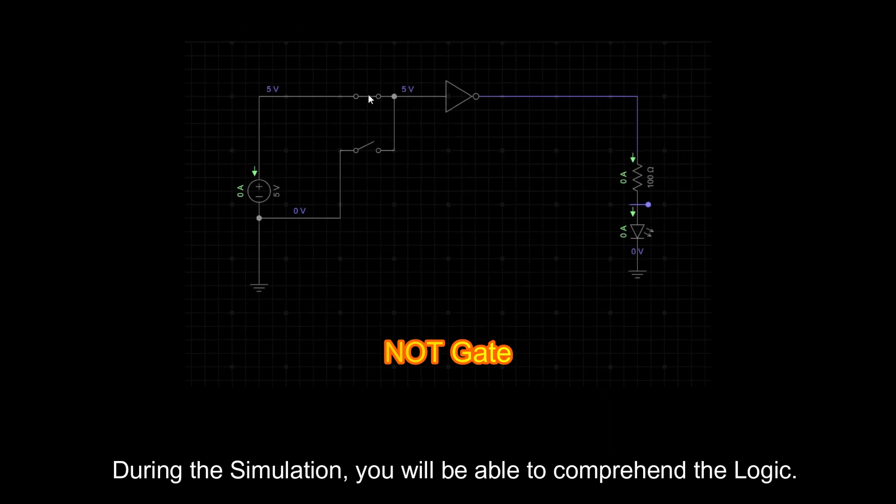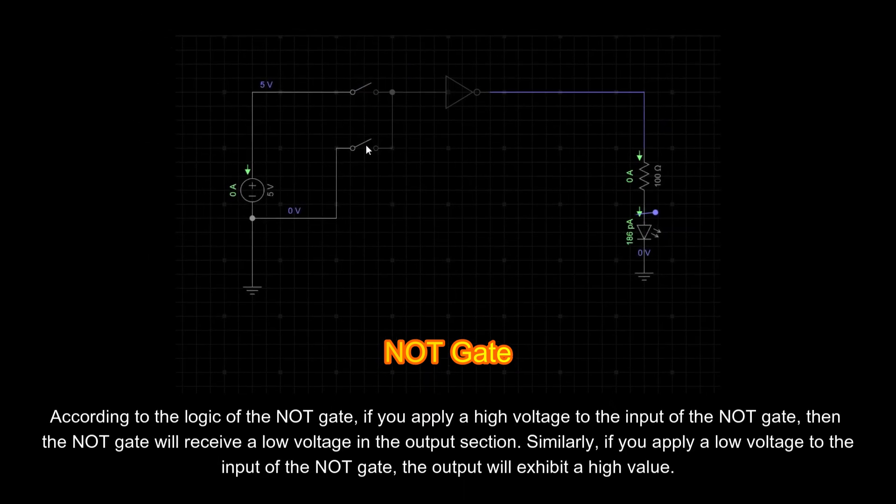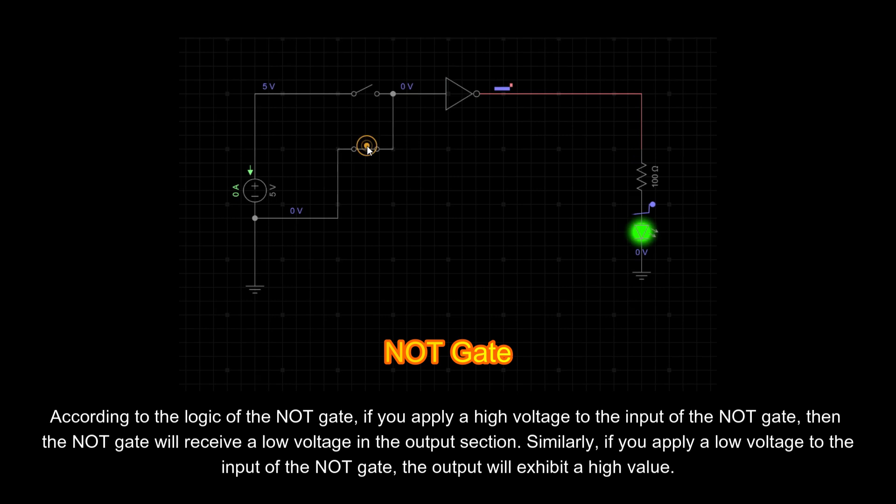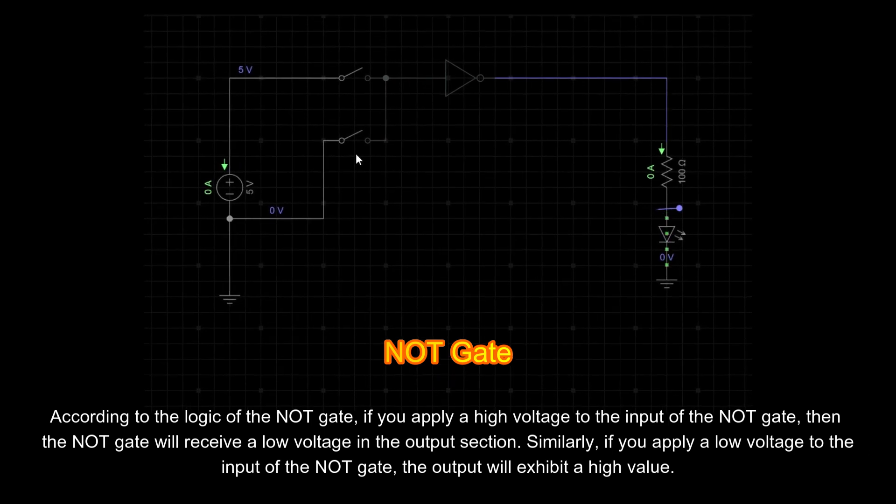During the simulation, you will be able to comprehend the logic. According to the logic of the NOT gate, if you apply a high voltage to the input of the NOT gate, then the NOT gate will receive a low voltage in the output section. Similarly, if you apply a low voltage to the input of the NOT gate, the output will exhibit a high value.